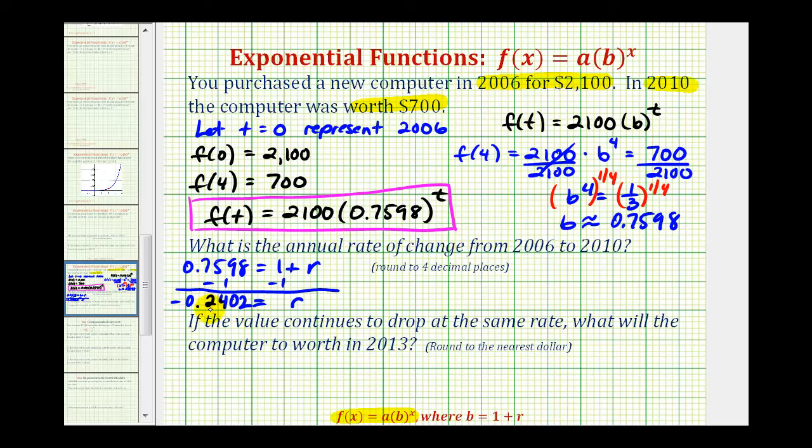So if we convert this to a percentage, this would be 24.02%. So we can say the annual rate of change is a decrease of 24.02% in value per year from 2006 to 2010.